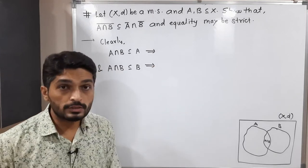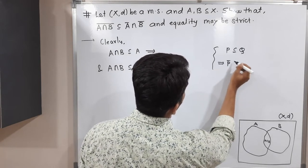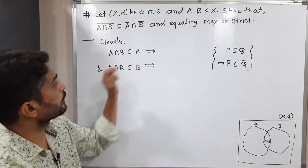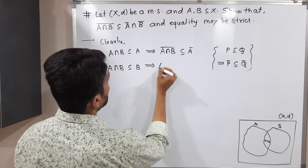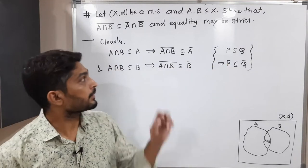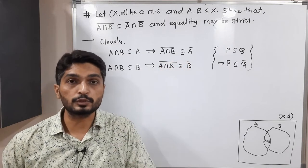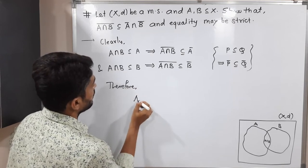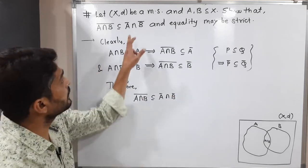We have already proved some results, and I am going to use them here. That result was: if P is a subset of Q, then the closure of P is a subset of the closure of Q. Since A intersection B is a subset of A, the closure of A intersection B is a subset of the closure of A. Similarly, the closure of A intersection B is a subset of the closure of B. Therefore, the closure of A intersection B is a subset of the closure of A intersected with the closure of B.